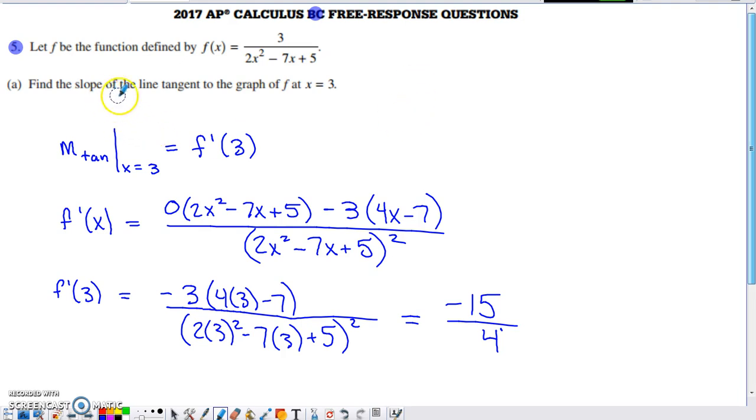And then in part A, it asks us to find the slope of the line tangent to the graph of this function at x equals three. And this should hopefully be really straightforward.